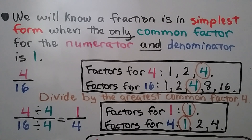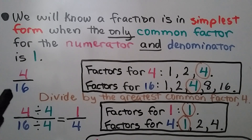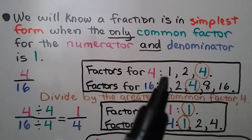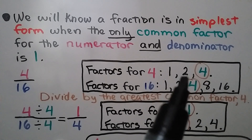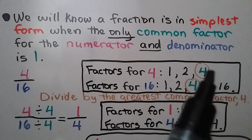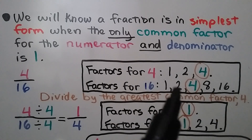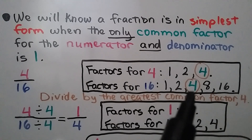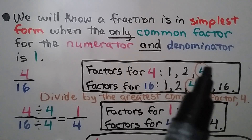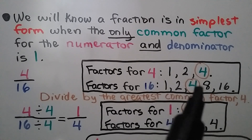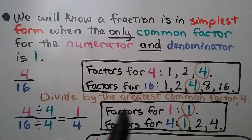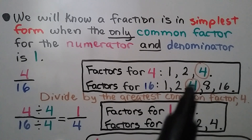We will know a fraction is in simplest form when the only common factor for the numerator and denominator is one. We have four-sixteenths. We write the factors for four: one times four and two times two, so we have one, two, and four. We write the factors for sixteen: two times eight, or four times four. The common factors here would be one, two, and four. We divide by the greatest common factor, four.